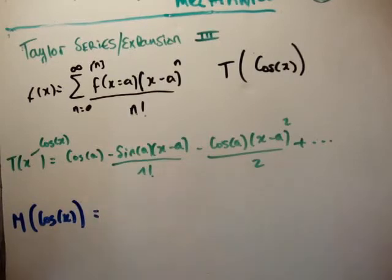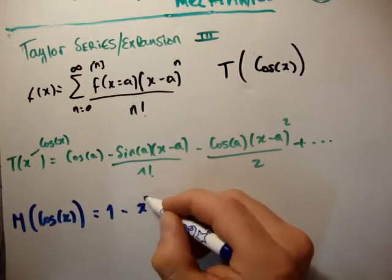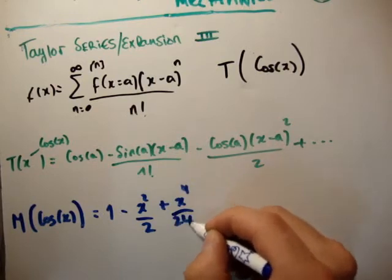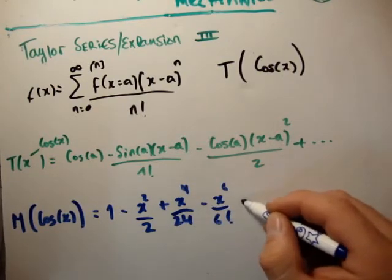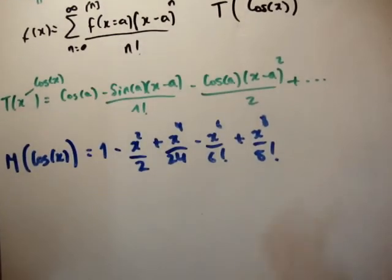Well, this time we set all our a is equal to 0. And if we do that, we're going to get 1. We're going to get minus x squared over 2, we're going to get plus x to the 4 over 24, minus x to the 6 over 6 factorial, and plus x to the 8 over 8 factorial.